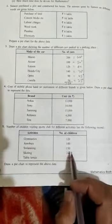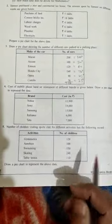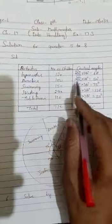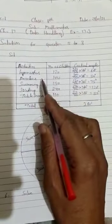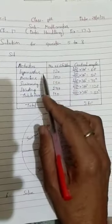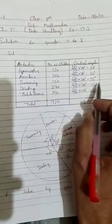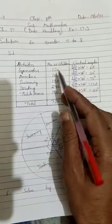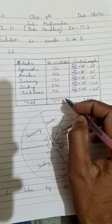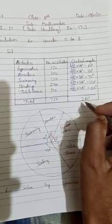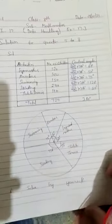Total students visiting sports club equals 720. Total angle 360 degrees. Circle draw with usual radius. First angle 60 degrees, second Aerobics 50 degrees, Swimming 20 degrees, last Table Tennis 55 degrees. So this way you can draw.